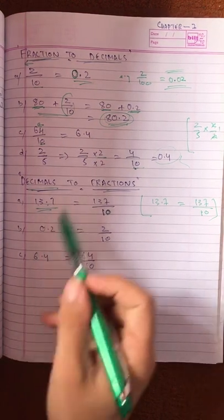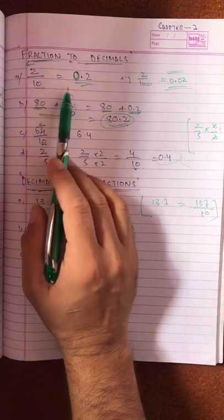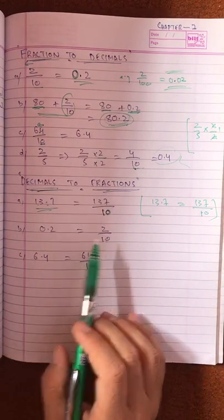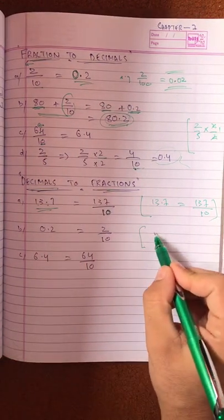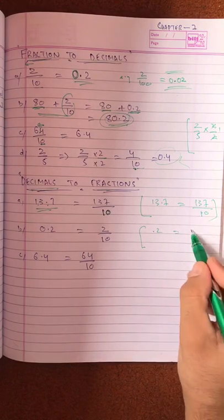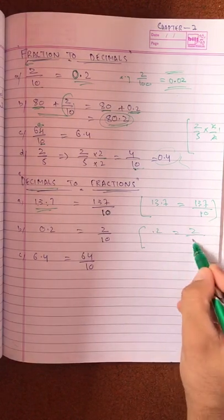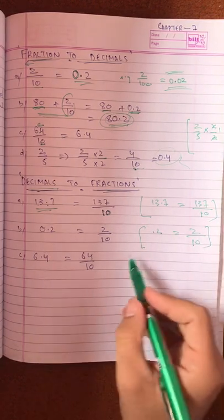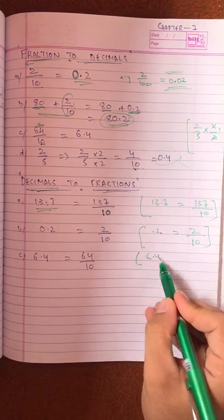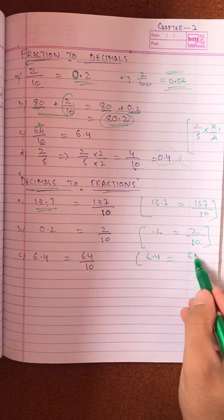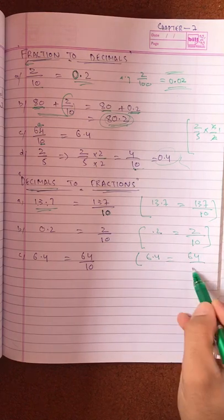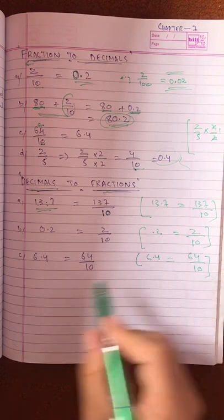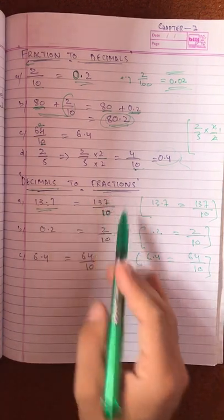Now we have 0.2. What did we convert 2 by 10 into? Point two. So we reverse it: 0.2 becomes 2 over 10. Here we see 6.4. What will we do? We write 64 and the decimal moved one place, so we divide by 10. So we have converted the decimal to fractions.